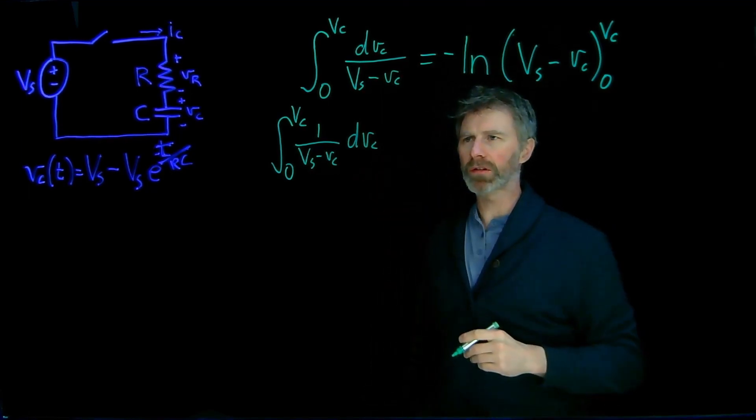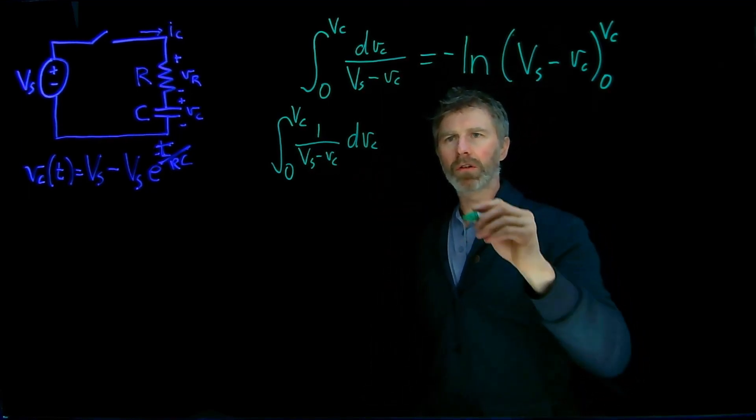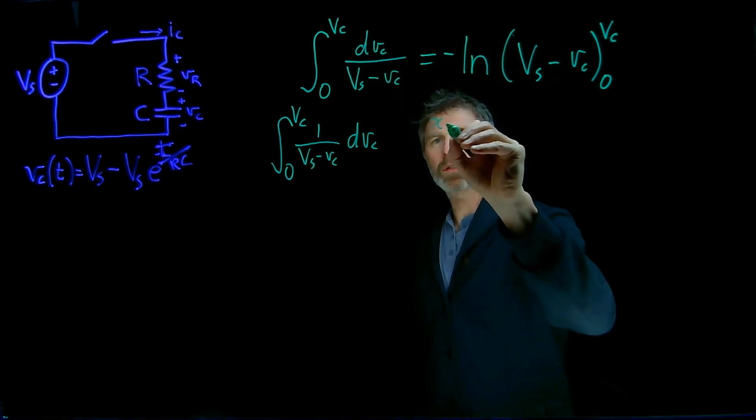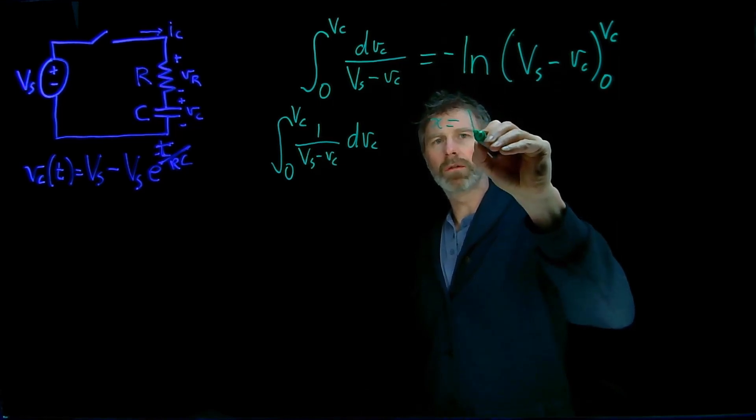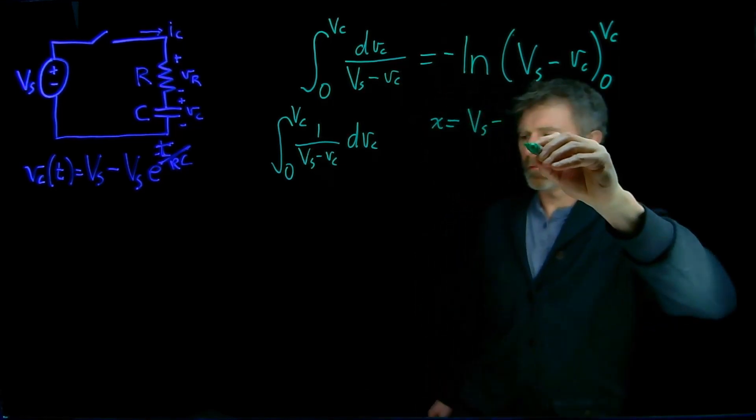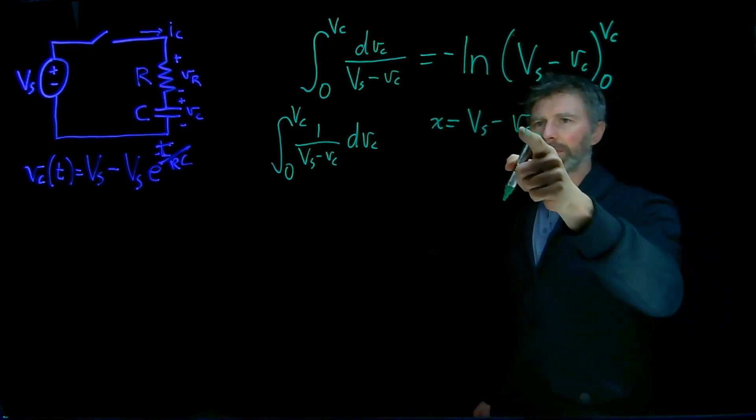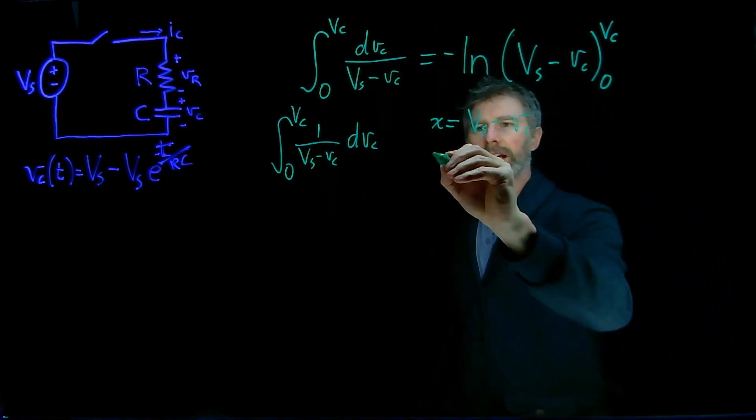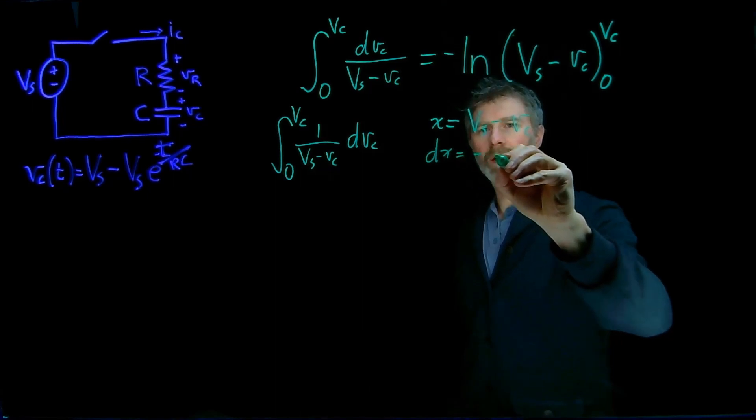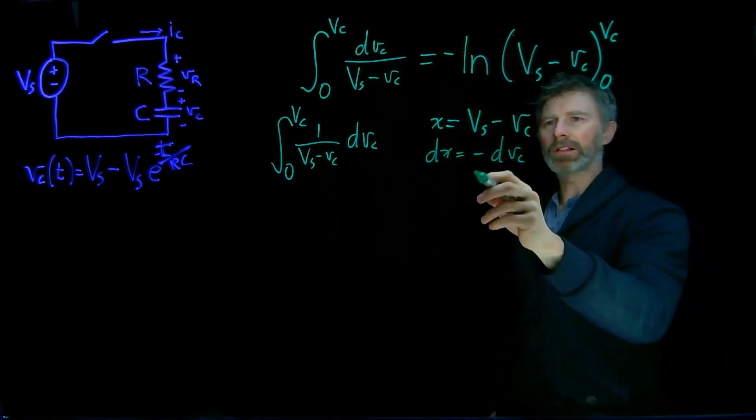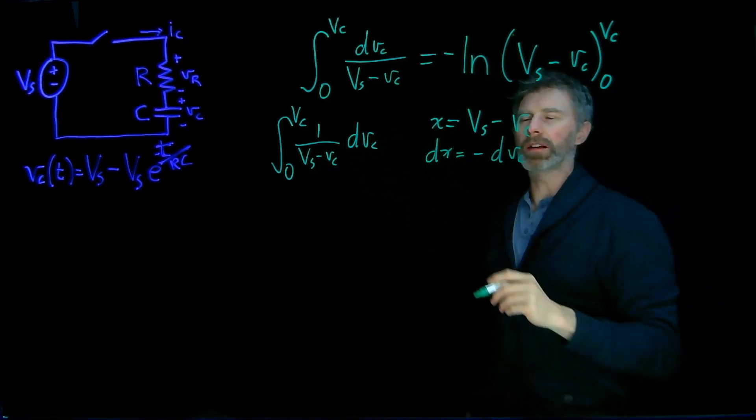That's the method that we need to use to solve this, and so if I let x equal Vs minus Vc, I'm going to substitute x in for the equation there, and dx is equal to negative dVc. So I can substitute these values into that equation there,